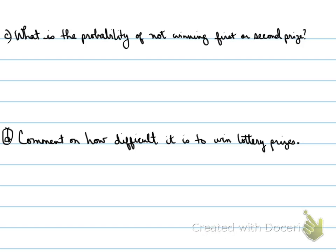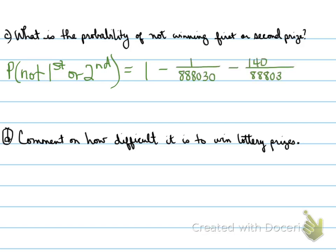Hopefully, you're thinking, oh, that's the indirect method. And that's right. The probability of not getting first or second is taking 100% minus first place and minus second place. And so, that will give us 887,889 over 888,030, which is equal to literally almost 100%. You're most likely not to win the lottery. Again, it's drawn by luck, not necessarily by skill.